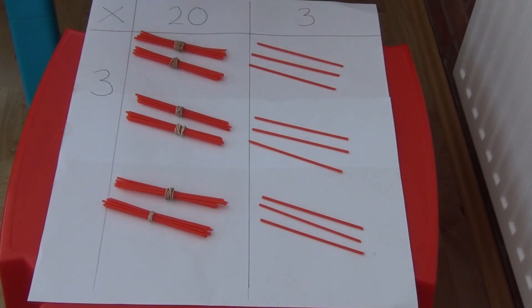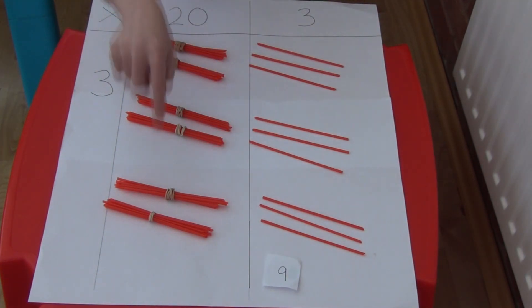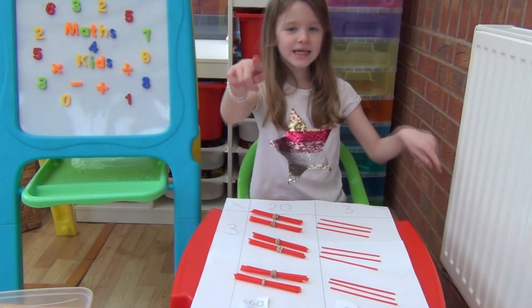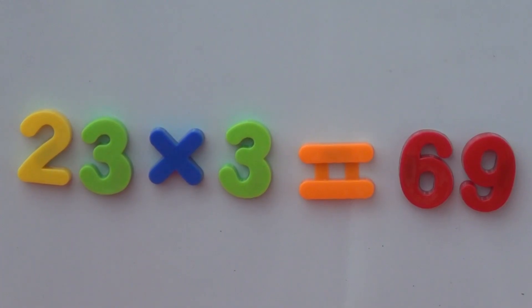So I have 23 and 23 and 23, or 23 times 3. I need to add up how many 10s and how many 1s I have all together. I have 3, 6, 9 1s and 2, 4, 6 10s which is 60. 60 in the 10s and 9 in the 1s means I have 69 all together. So 23 times 3 equals 69.